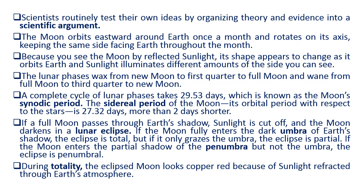The moon orbits eastward around Earth once a month and rotates on its axis, keeping the same side facing Earth throughout the month. Because you see the moon by reflected sunlight, its shape appears to change as it orbits Earth and sunlight illuminates different amounts of the side you can see.